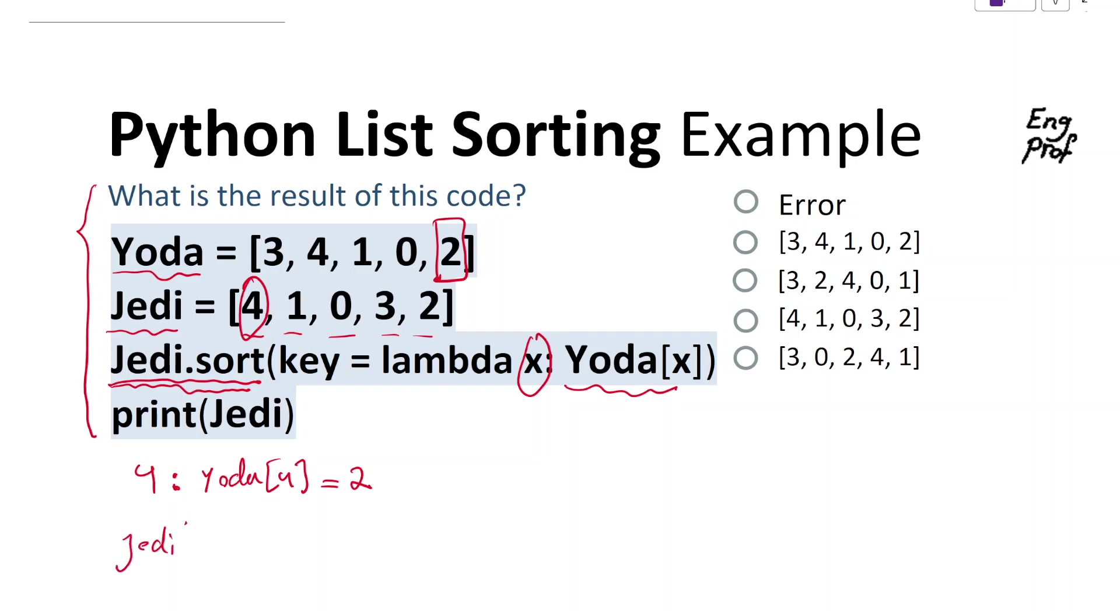In the updated Jedi, we have five positions. So that means 4 needs to go and sit in position 2, right here.